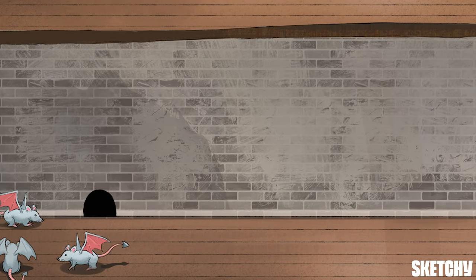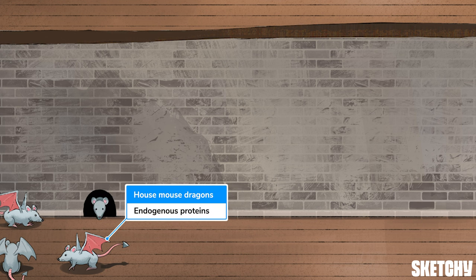This bottom kitchen is infested by little mouse dragons that live inside the kitchen — and the gross part is that they taste like chicken. These pesky mouse dragons represent antigens that are found inside the cell. Once processed, these endogenous proteins are presented by MHC-1 on the cell surface and provide a window into what is being produced inside the cell.